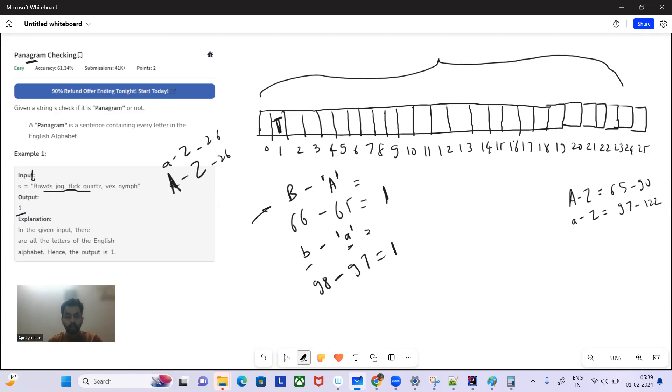So we are going to do the same thing for all the characters. And then what we're going to do is we're going to iterate through this boolean array. If we find any place false, then we are going to return 0. And if all are true, then we are going to return 1.